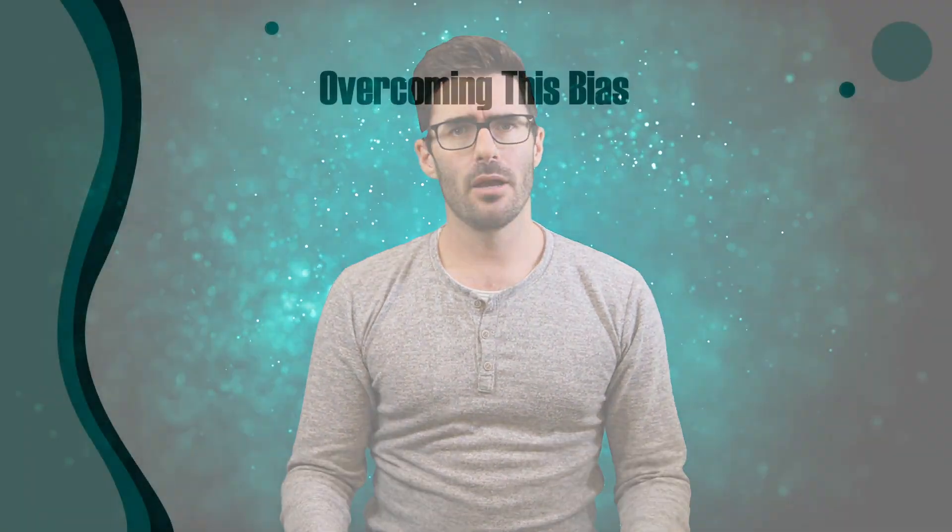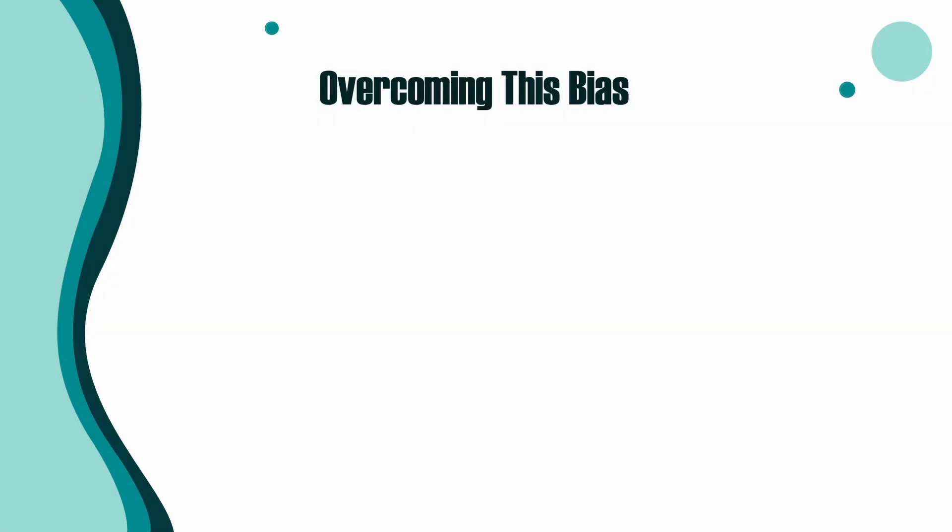So now that we know the availability bias exists, how can we use scientific thinking to overcome it? Well, the first step is to look at the data. Our brains are magnificent machines, but they're also squishy and unreliable. So to avoid letting a dramatic news story hijack our thinking, we need to look at the cold hard facts.